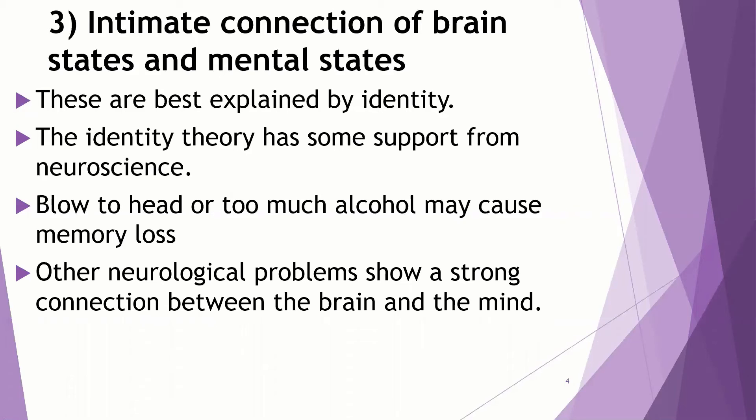There are other neurological problems that show strong connections between the brain and the mind. For example, there are physiological changes in the brains of Alzheimer's patients. With dementia, you can identify shrinkage of the brain sometimes. After somebody has had a stroke and there's been damage to the brain, there are changes in one's mental states. After automobile accidents with a head injury, all of these things indicate really strong connections between neurological issues and changes in the brain and changes in one's mind.